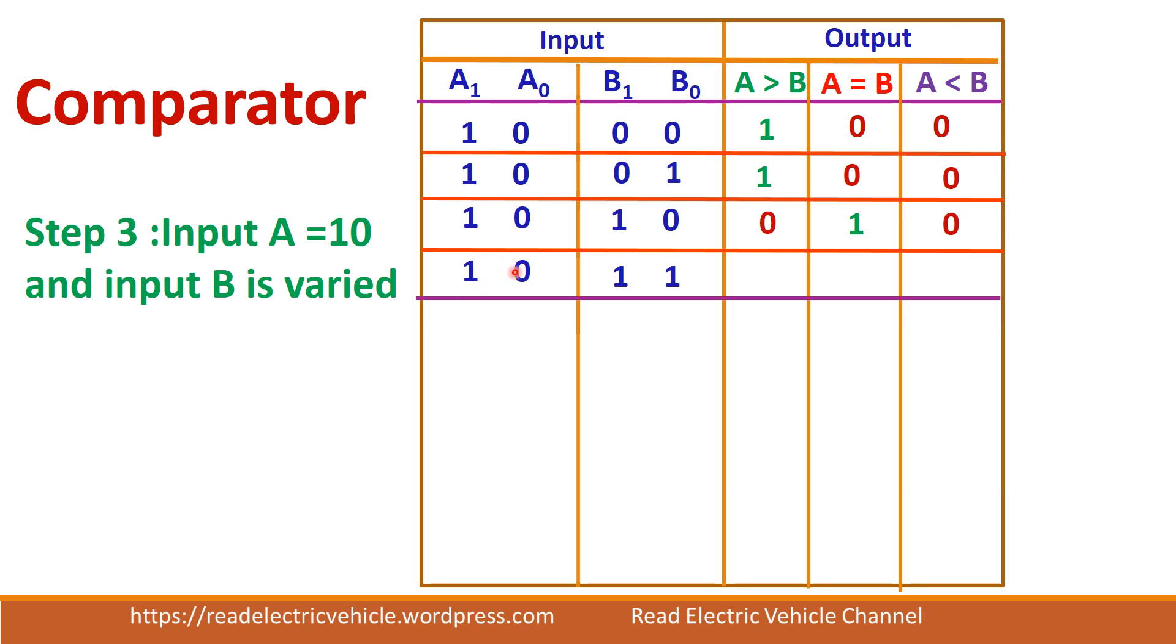In fourth case A is 1, 0 whereas B is 1, 1. So A is less than B.